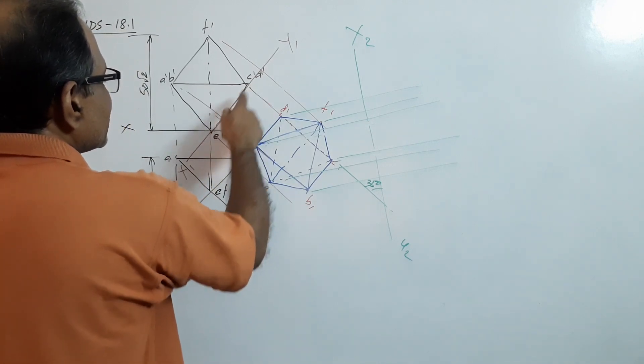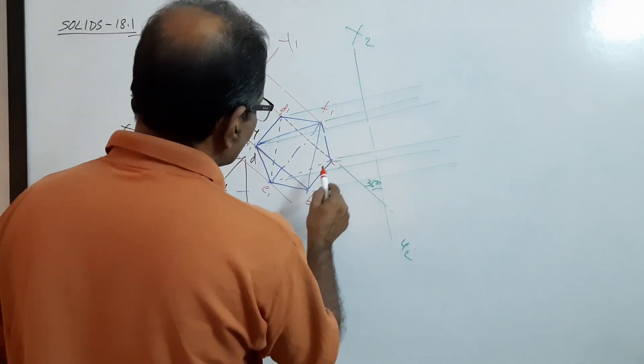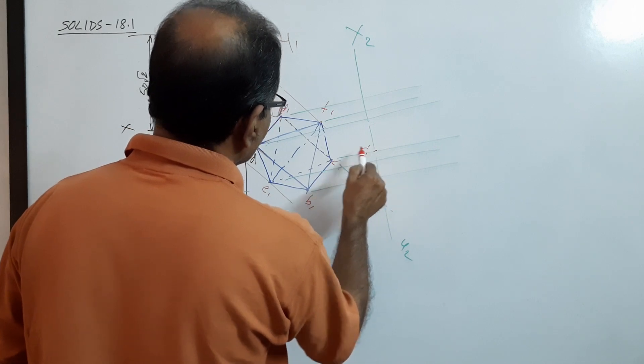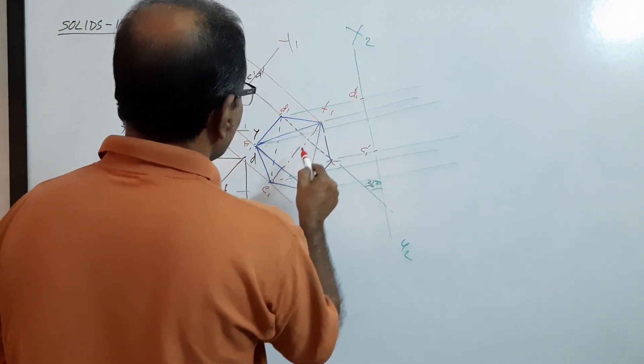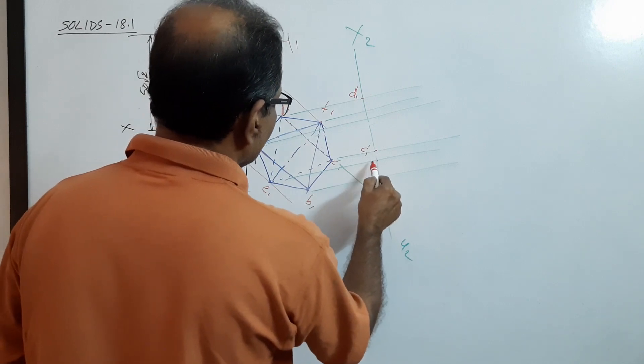C dash, D dash, and E dash are zero distance, so on the projector through C you have got C1 dash, on the projector through D you have got D1 dash, on the projector through E you have got E1 dash.